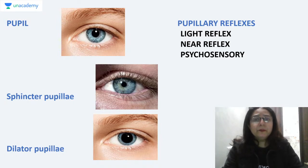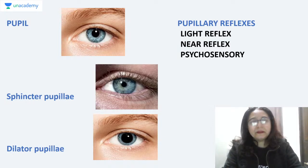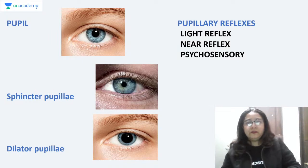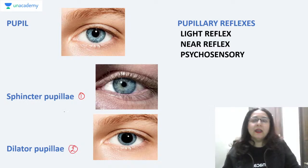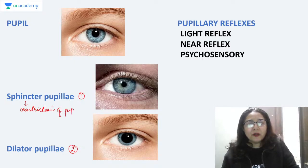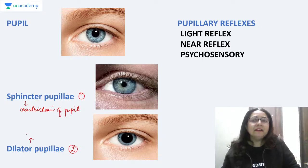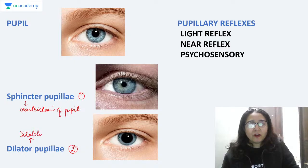The pupil is the aperture of the eye, and its function is to regulate the amount of light entering the eye so that we have clear, focused vision. The change in the size of the pupil is controlled by two muscles of the iris: the sphincter pupillae and the dilator pupillae. The sphincter pupillae brings about constriction — the smaller size of the pupil — through its contraction.